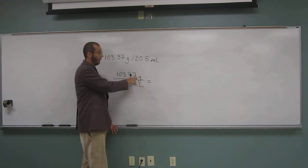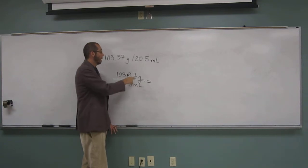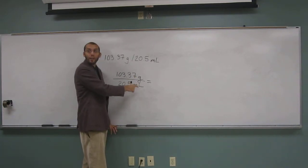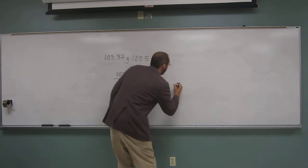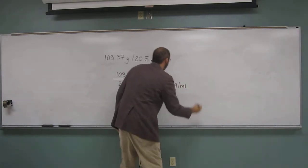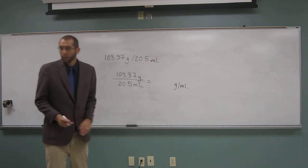You'd have to have milliliters on the top or grams on the bottom to have those units cancel out. So grams divided by milliliters gives us a new, what we call, derived unit. So I'm going to write that down, grams per milliliter. And this is going to go to three.